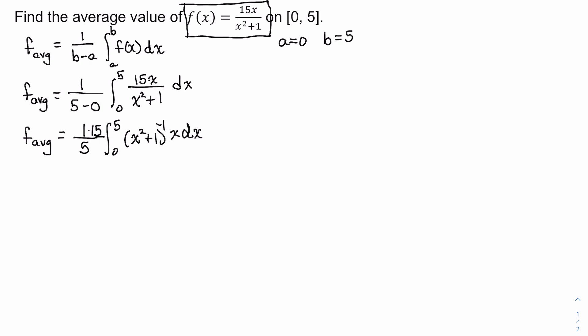If u = x² + 1, we find du by differentiating the right-hand side: du = 2x dx. I don't have the factor of 2, but I do have x dx, so dividing both sides by 2 gives ½ du as the replacement for x dx.